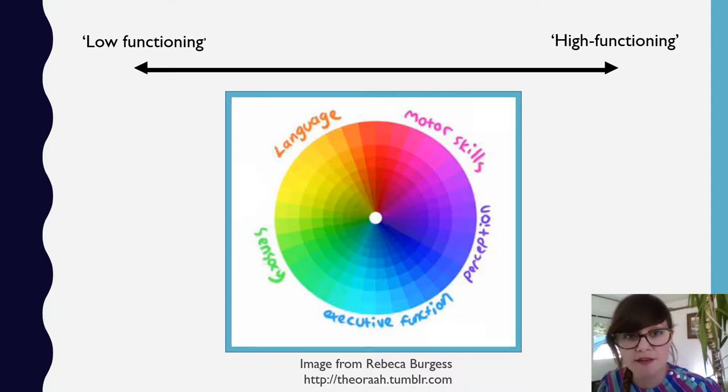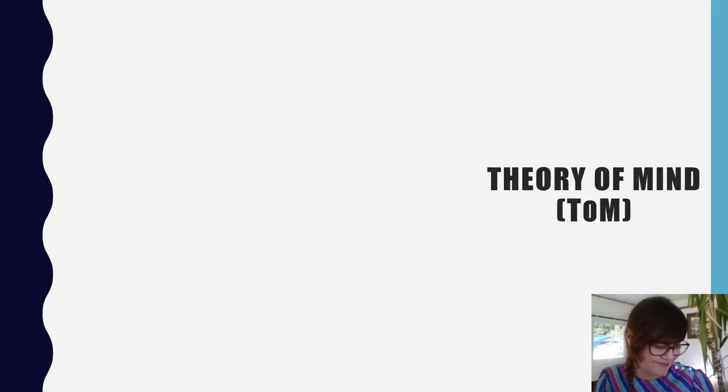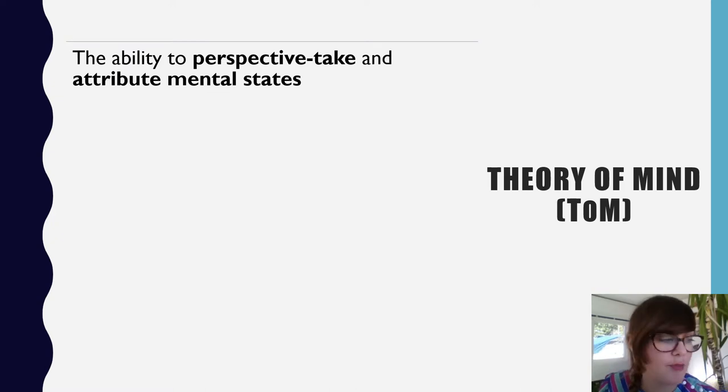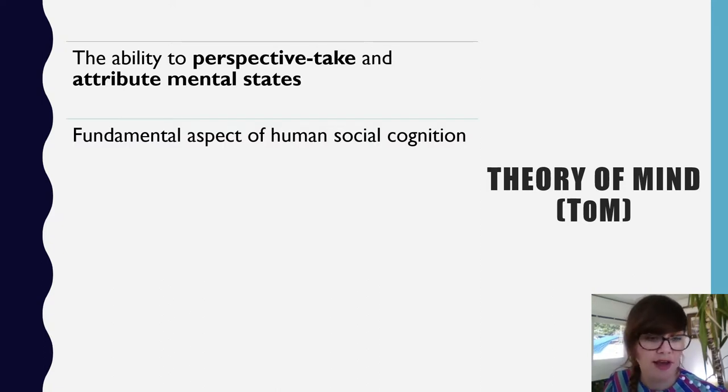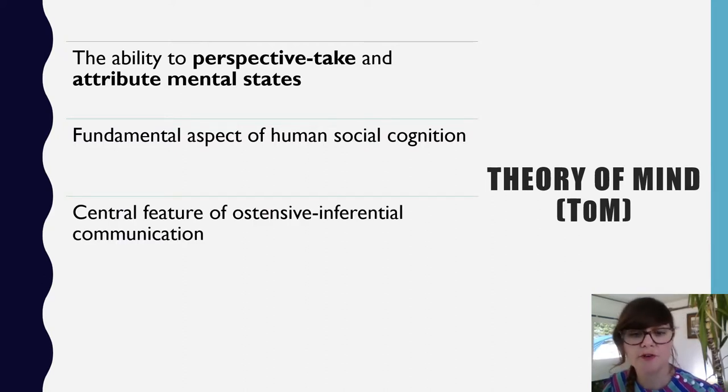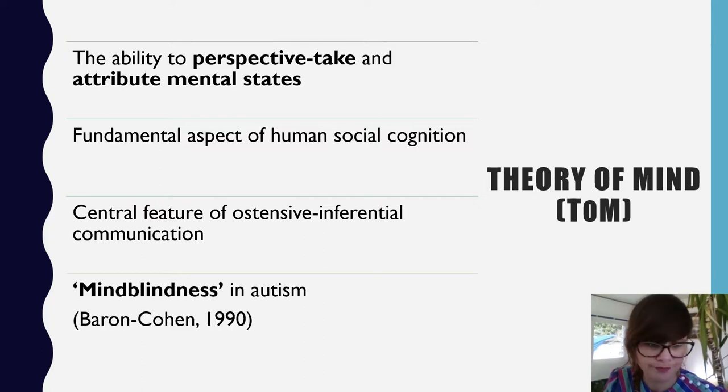Okay, so theory of mind is understood to be the ability to perspective-take of oneself and of others. It's widely accepted as a fundamental aspect of human social cognition and is a central feature of ostensive inferential communication. In 1990, Simon Baron-Cohen coined the term 'mind blindness' to describe what he theorized was a cognitive deficit in autistic individuals, resulting in the inability to detect or make sense of the state of others.